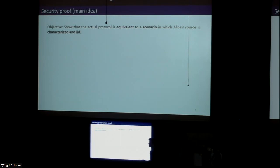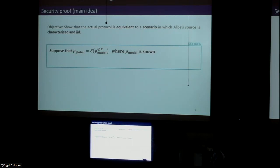To prove the security, rather than try to do it directly, we did it indirectly by first showing that the actual protocol is actually equivalent to a scenario in which Alice's source is both characterized and independent and identically distributed. The key idea is the following: suppose there's some single round state ρ_model and some global quantum operation such that if Alice were to generate many copies of ρ_model and then apply this global operation, she would actually get back the actual global state that she emits in the actual protocol. If we can find this mathematical relationship, in the security proof we can simply assume that Alice generates many copies of this state ρ_model and that this quantum operation is simply a part of the eavesdropper-controlled quantum channel.